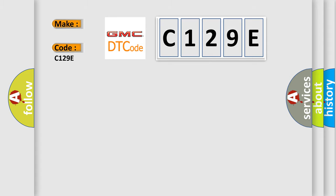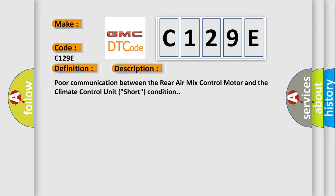The basic definition is short in the rear air mix control motor circuit. And now this is a short description of this DTC code: poor communication between the rear air mix control motor and the climate control unit, short condition.